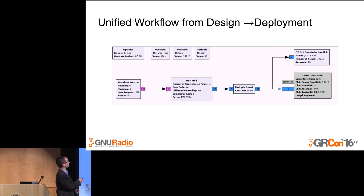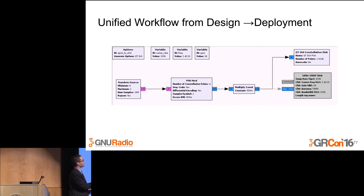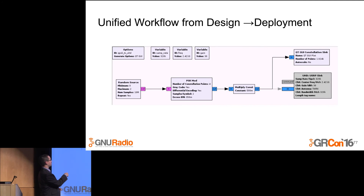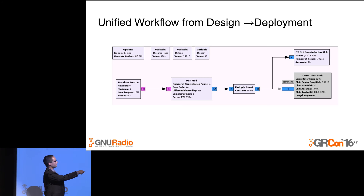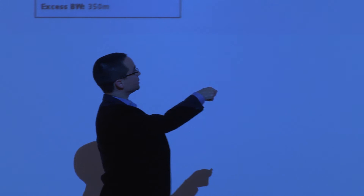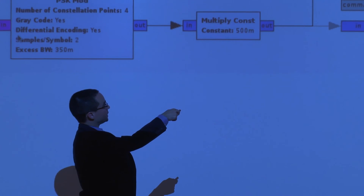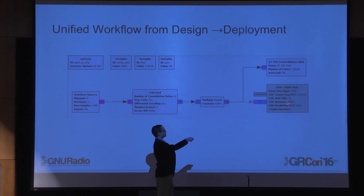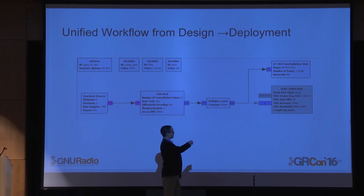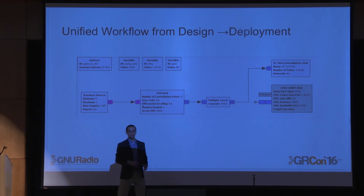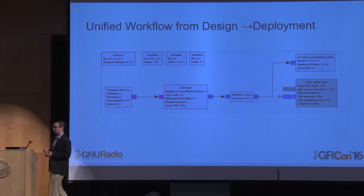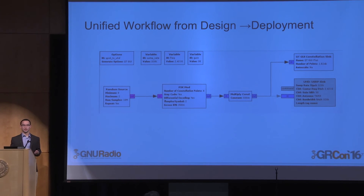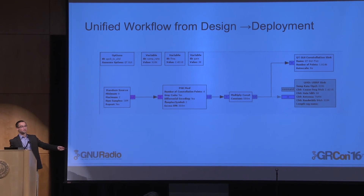As an example of this, here's a flow graph where a random source generates random data and modulates it. You can pipe it into either a GUI sink or a piece of hardware — there's no difference in connecting these blocks. That's the difference between simulating a communication system and actually transmitting.